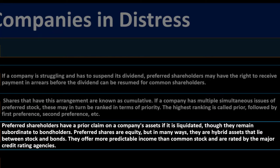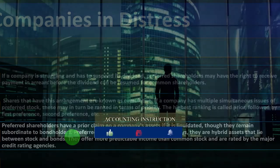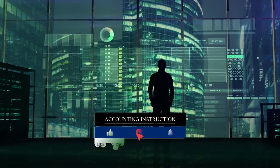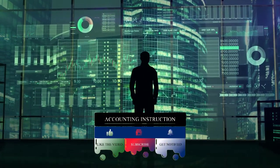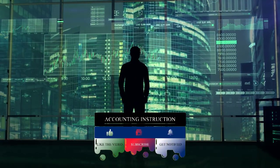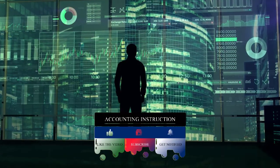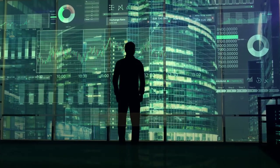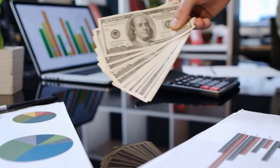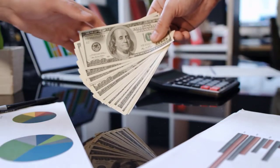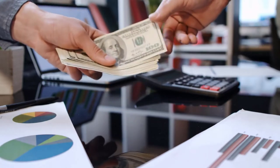If a company has multiple simultaneous issues of preferred stock, these may be ranked in terms of priority — the highest ranking is called 'prior,' followed by first preference, second preference, and so on. Preferred shareholders have a prior claim on a company's assets in the event of liquidation, though they remain subordinate to bondholders. If a company goes bankrupt, it pays off liabilities first, then bondholders, then preferred shareholders, then common shareholders.